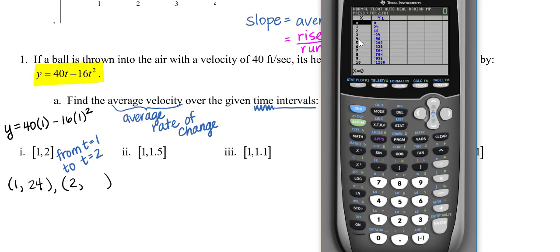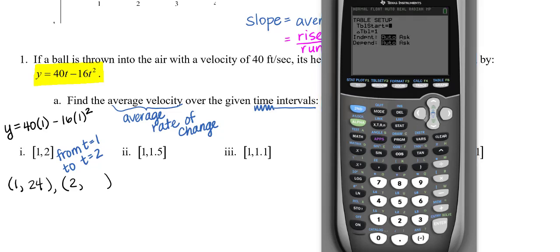Right now our tables probably look different because they have various starting x values and change in table settings. For me, my change in table is one, so inputs increase by one. I want to go to second window or table setup. When you get to table setup, arrow down to independent and scroll over to hit enter on Ask.